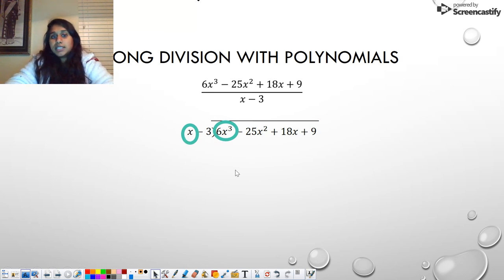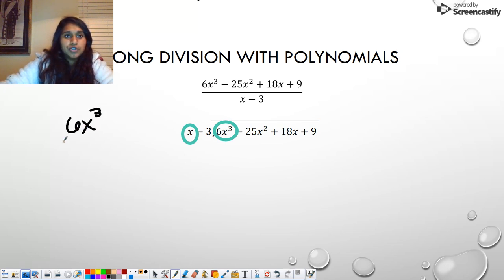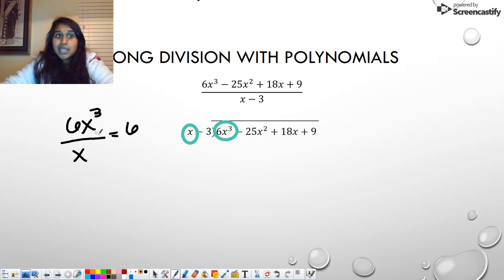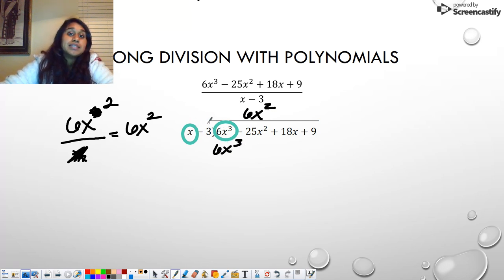How many times does x go into 6x cubed? If you can't mentally see that, we can write that out. We can take 6x cubed and divide by x. Those 6s are going to stay, so I still have a 6. But I have 3 x's on top and 1 x on bottom. So one of these is going to disappear, and I'm left with 2. So my first term is going to be 6x squared. Then I take that value and multiply throughout. 6 times negative 3 should give me negative 18x squared. And then we do what we always do with long division. We subtract.